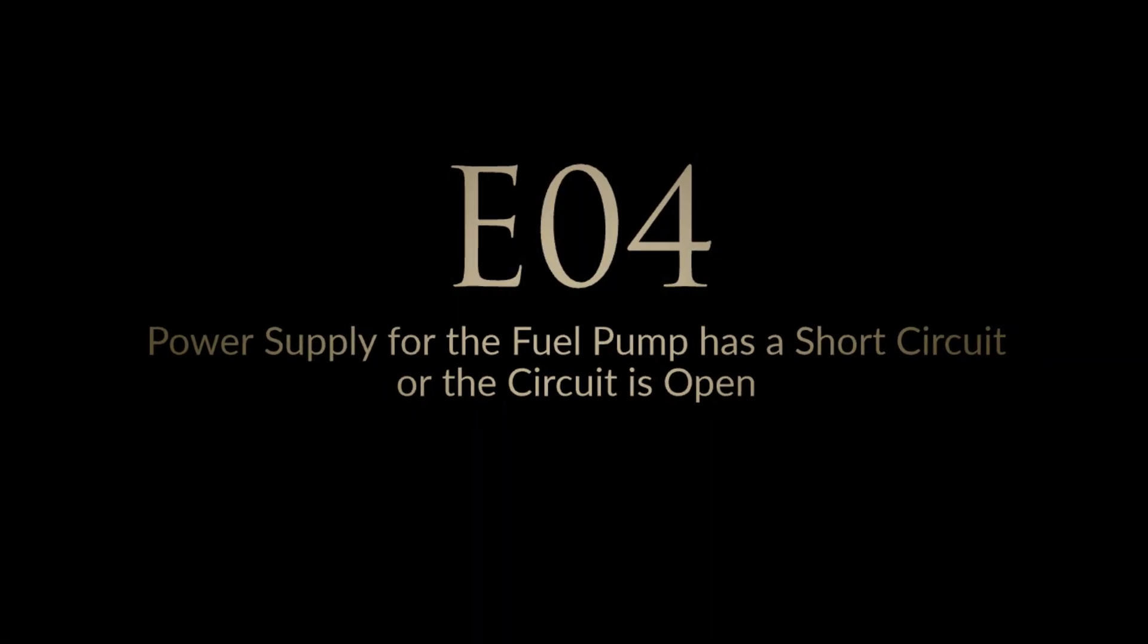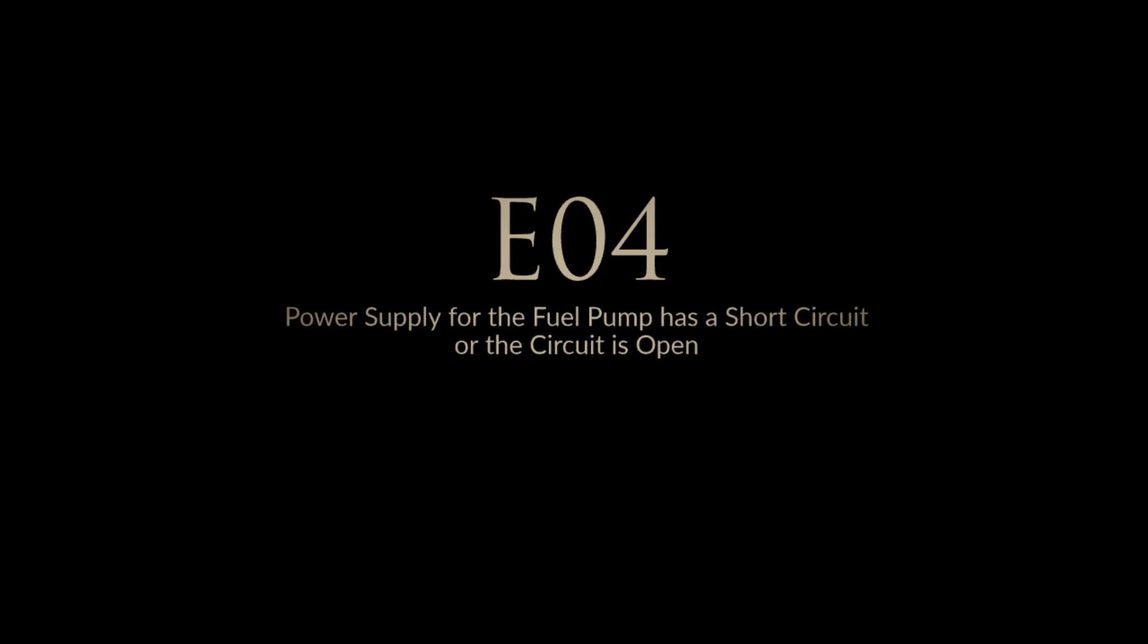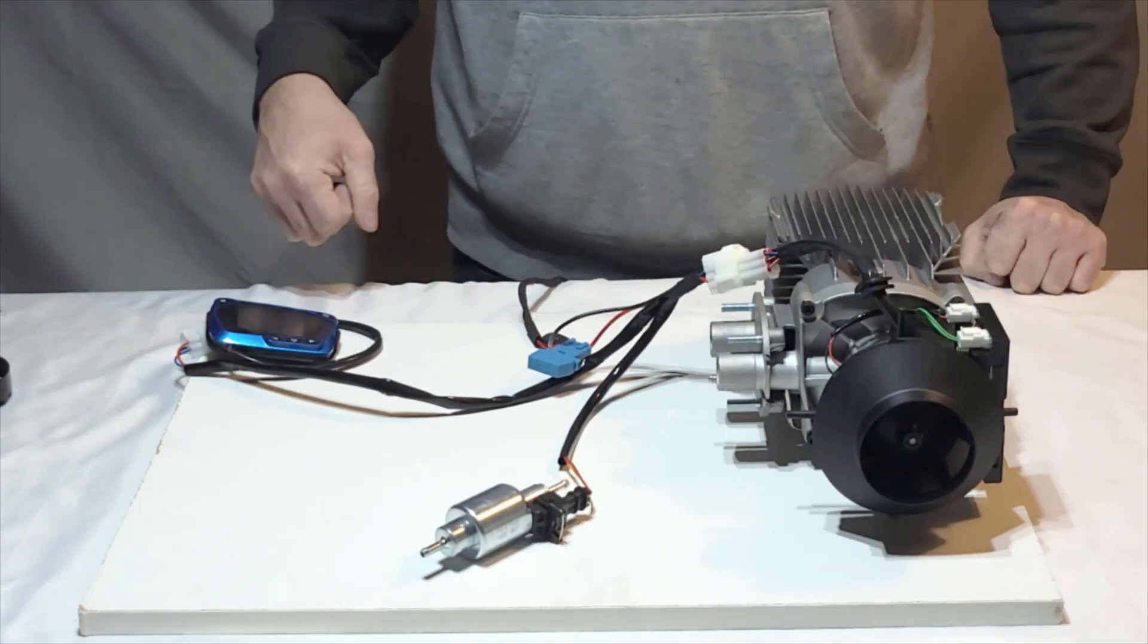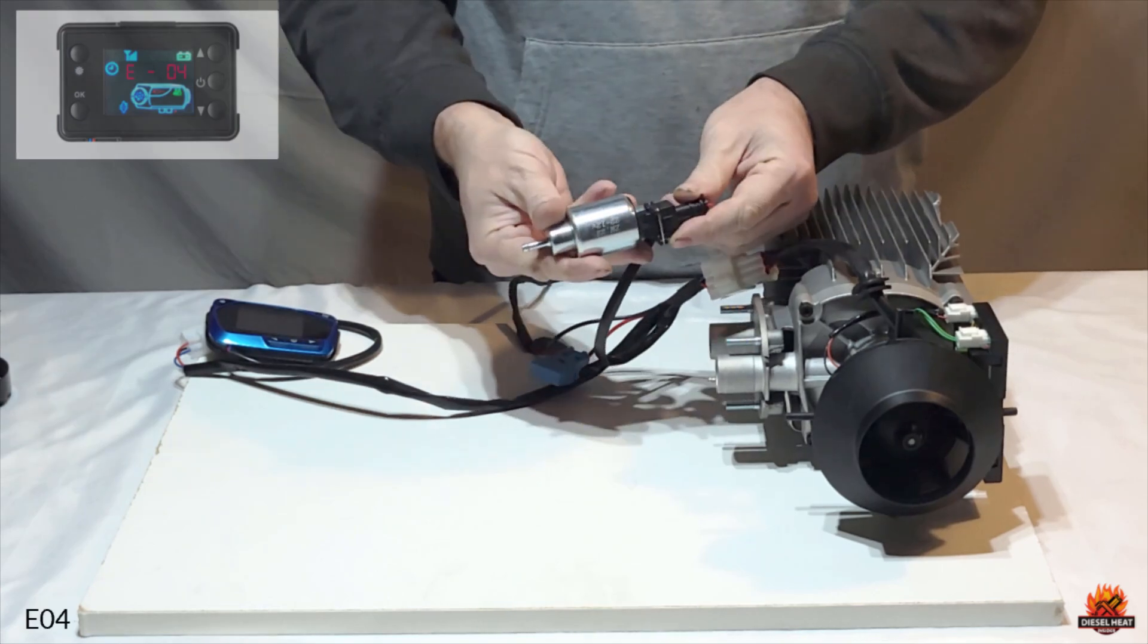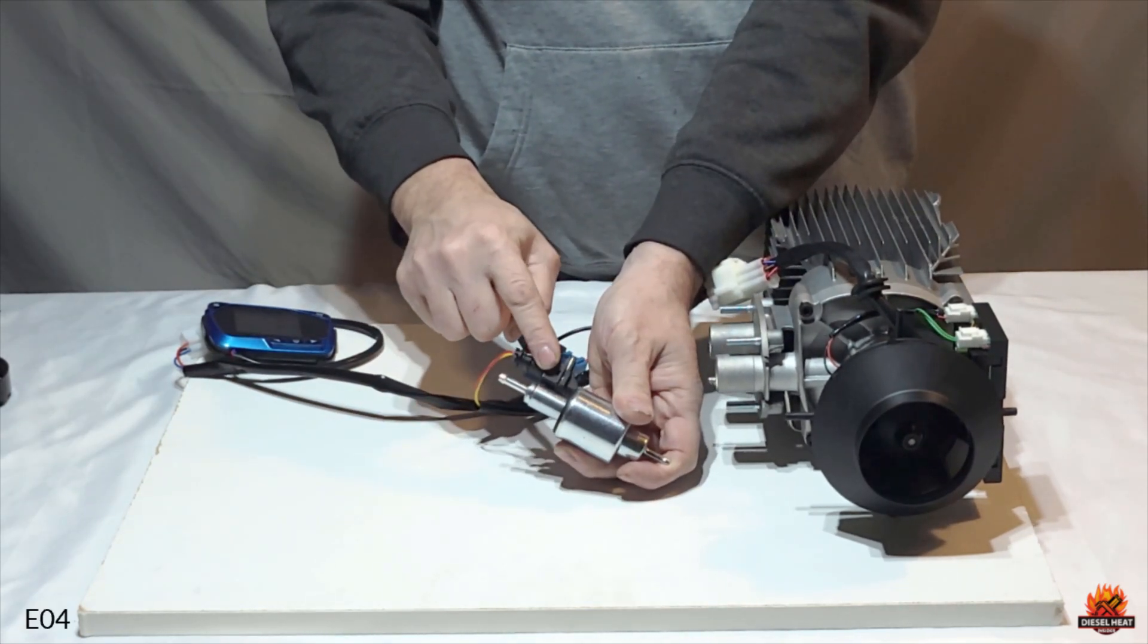Error code 4, power supply for the fuel pump has a short circuit or the circuit is open. To address error 4, ensure that the fuel pump connections are clean and snug, allowing them to establish a secure and effective connection.